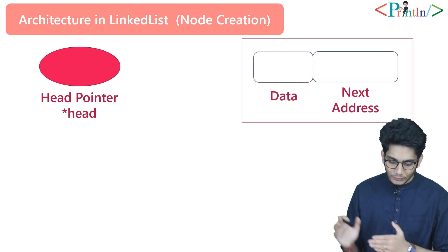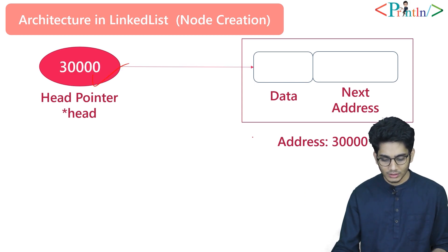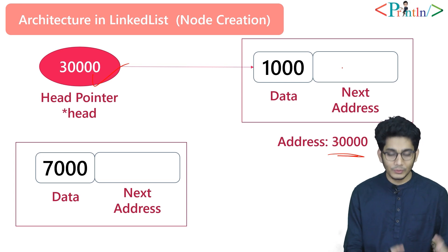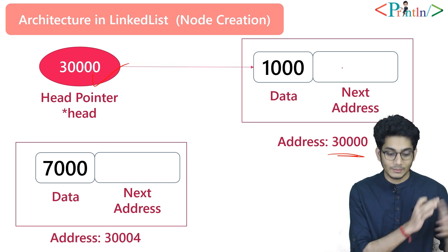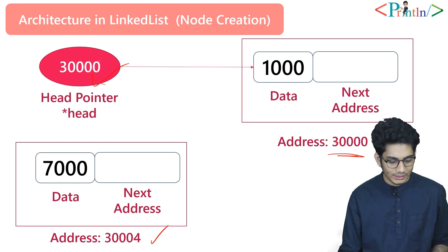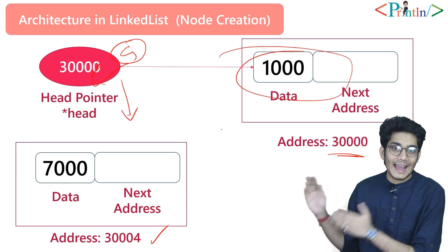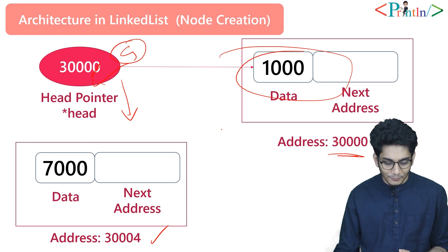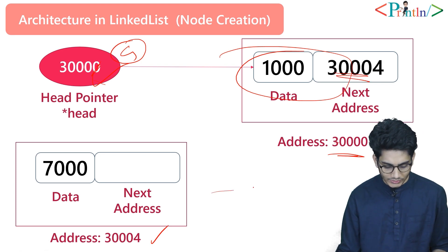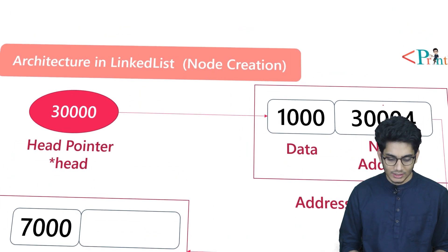Now let's talk about the architecture of a linked list. We have a head pointer, then we allocate a node at address 30000. Our head node will point to this first node and store 30000. Initially the next is null. Then we create another node at address 30004. We store 30004 in the next address portion of the first node, so the first node now points to the second node. This is the architecture of a linked list.